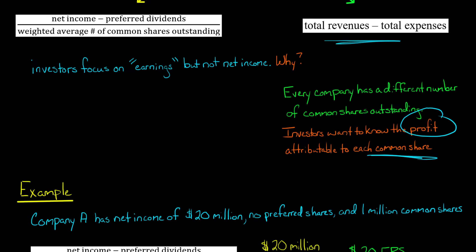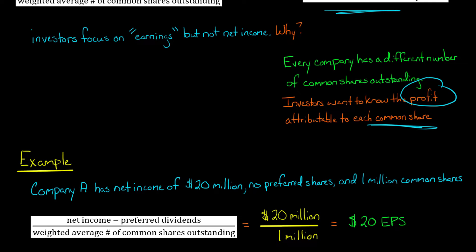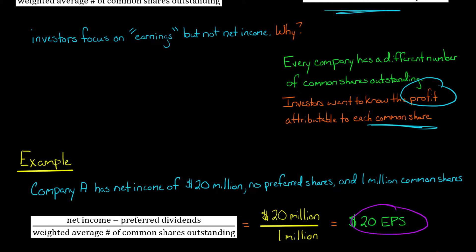So let's do an example. Let's say Company A has net income of $20 million. They don't have any preferred shares, so there's not going to be any preferred dividends. We have 1 million shares outstanding. So let's calculate their earnings per share. We've got $20 million in the numerator and $1 million in the denominator, so it's pretty easy — $20 earnings per share for Company A.